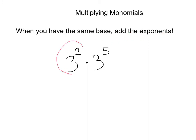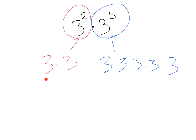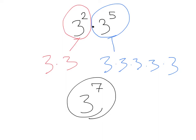Here we have 3 squared. We can write 3 squared as 3 times 3. Here we've got 3 to the 5th. We can write that as 3 times 3 times 3 times 3 times 3. So, we've rewritten 3 squared and 3 to the 5th. Check out how many 3's we have total — we've got 3 times 3 times 3 times 3 times 3 times 3 times 3. That's 3 to the 7th.